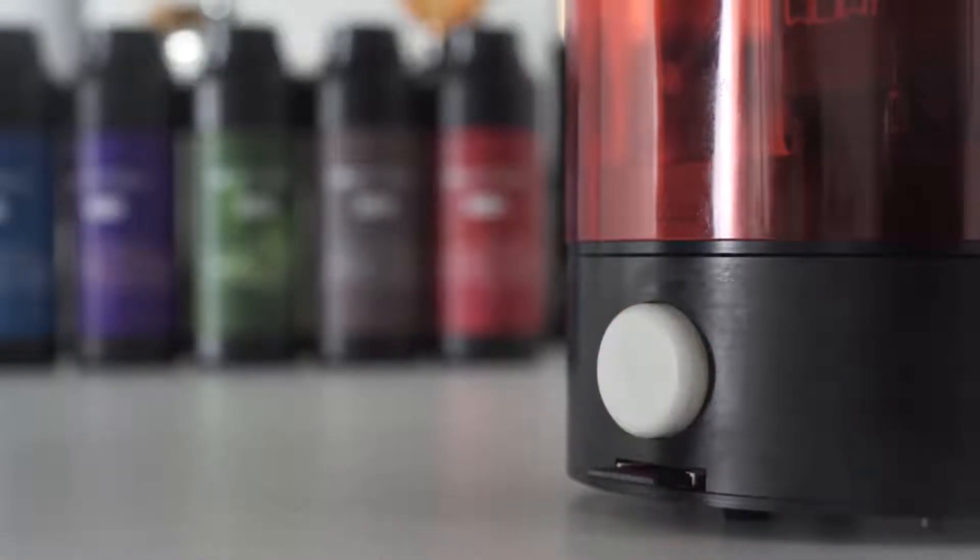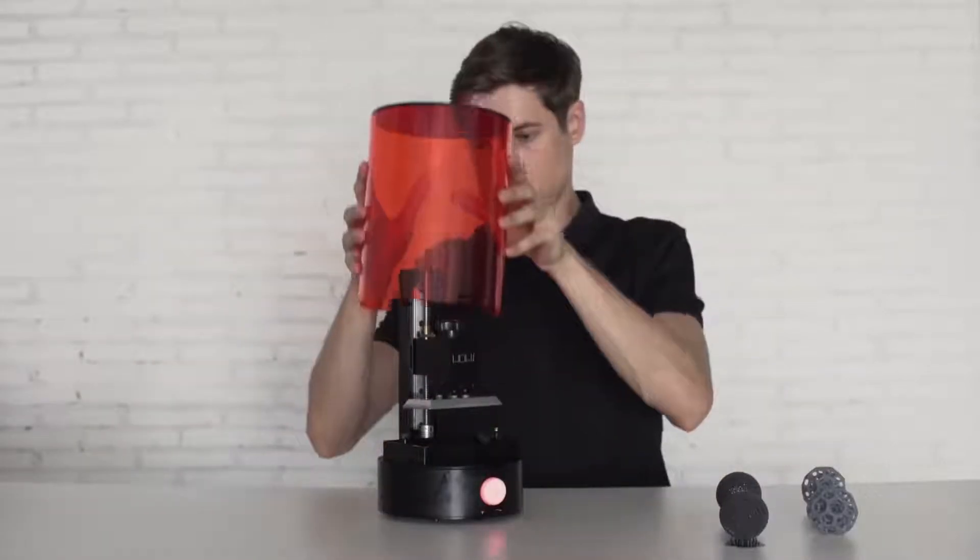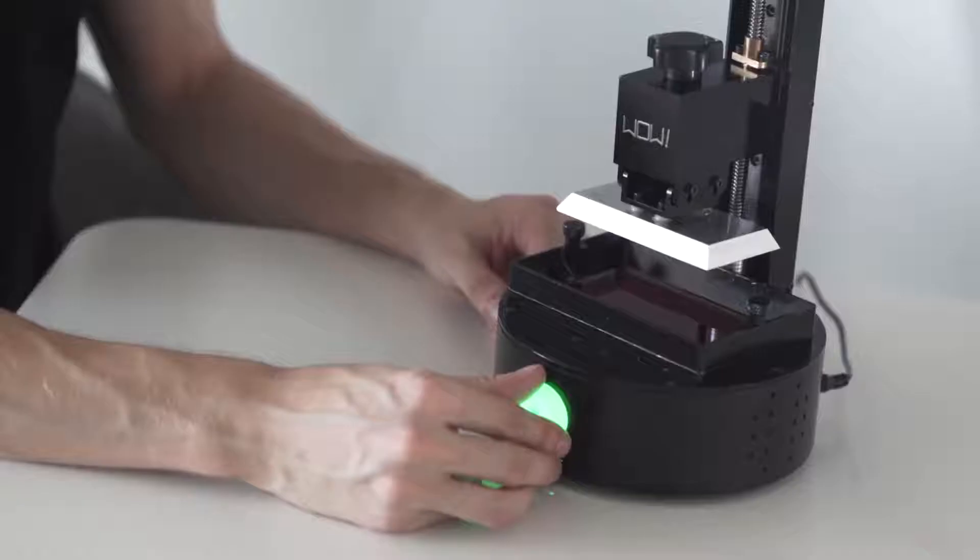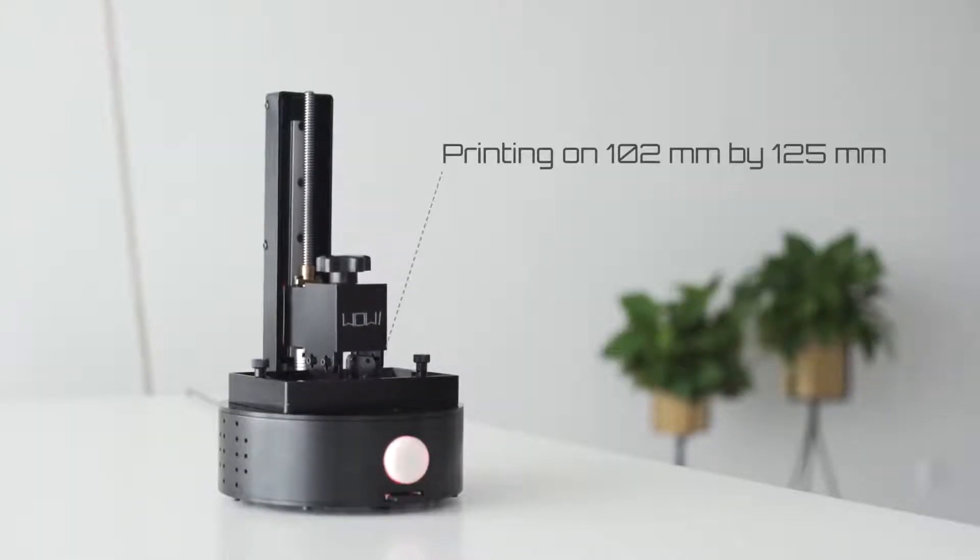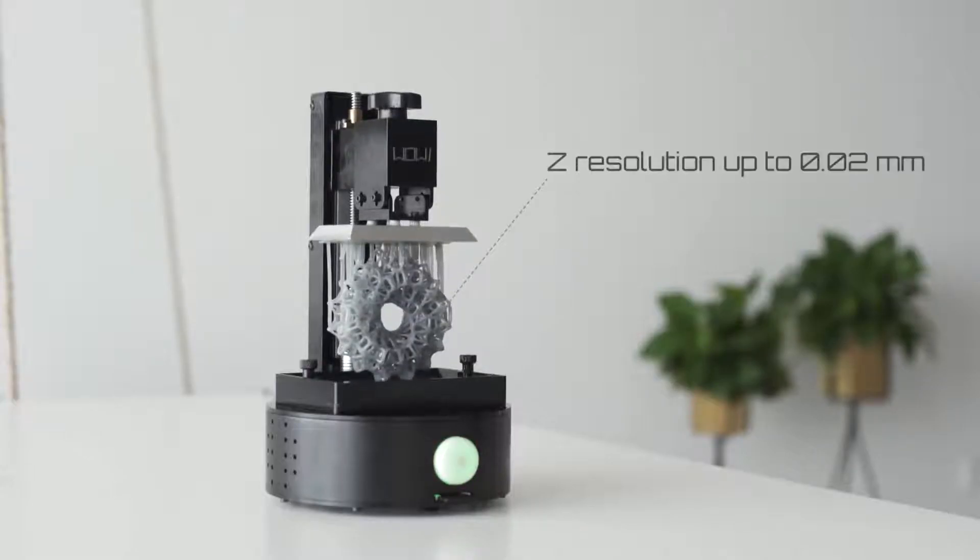During the printing, an LED light will keep you updated about the status and a UV protective translucent cover avoids any damage from the environment. The printing area is 102 x 125 mm with a 0.1 mm XY resolution and a Z resolution up to 0.02 mm.